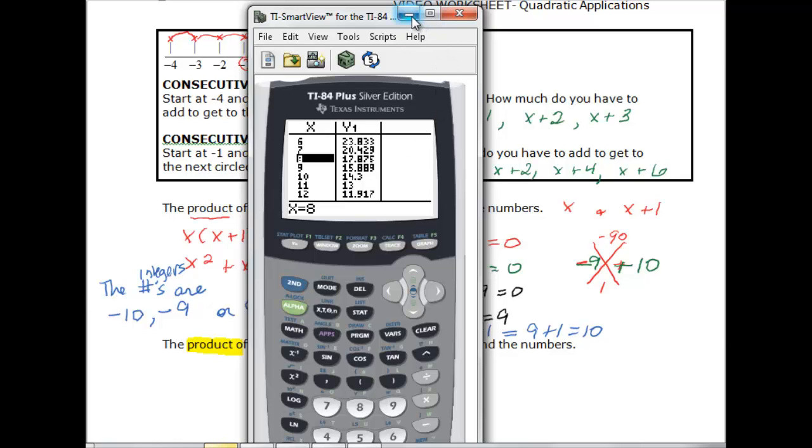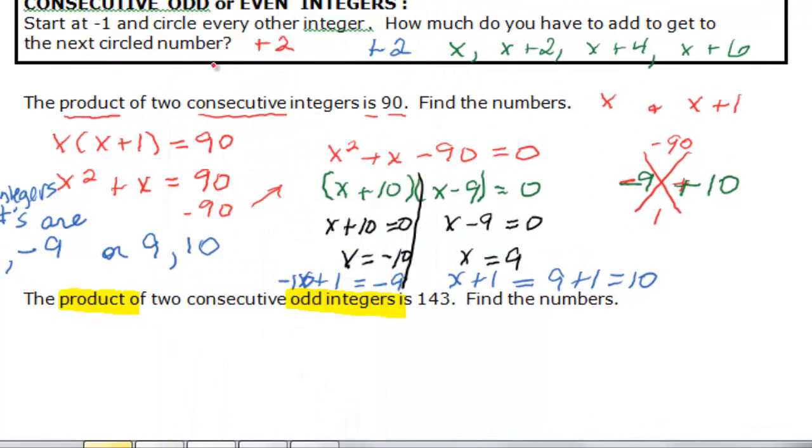So I'm going to say then that I have when I factor over here it's 143 and let's write the factors first. My numbers are x, always x is always the first one, times the consecutive odd so that would be x plus 2 and that's going to be equal to 143. So when I multiply I get x squared plus 2x equal to 143.